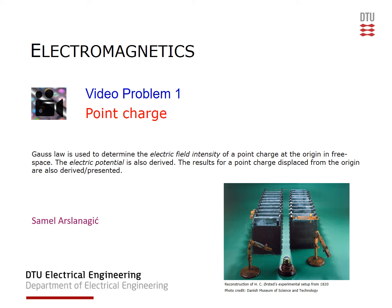This is video problem one. We are considering a point charge and will use Gauss's Law to get the electric field intensity of a point charge located at the origin in free space. We will also determine the associated electric potential. The corresponding results for a point charge displaced from the origin will also be derived in this video problem one.